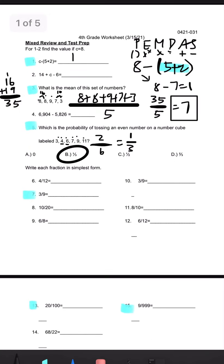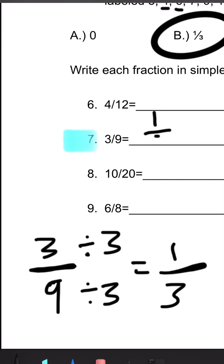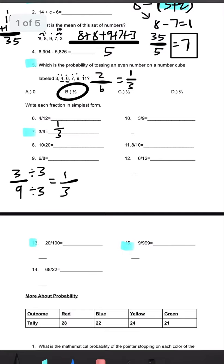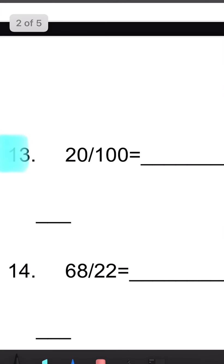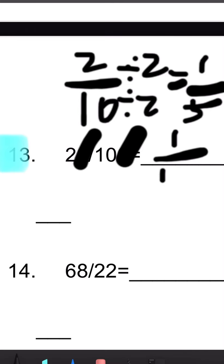Number 7, write each fraction in simplest form. So to make something in simplest form, you're just going to divide top and bottom by the same number. So we're going to divide by 3 and we get 1 third. And number 13, 20 over 100. We're going to use the knocking off the zero trick. So knock off the last zeros. So we get 2 over 10. We're going to divide top and bottom by 2 and we get 1 fifth.